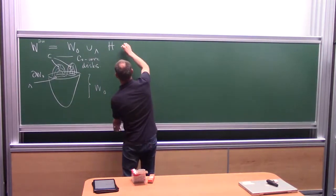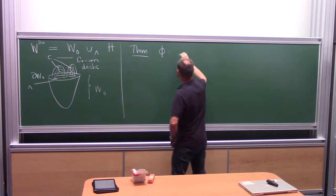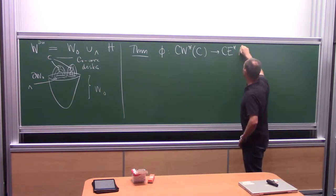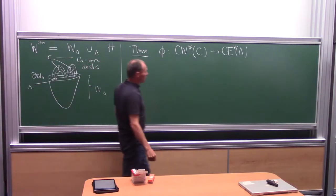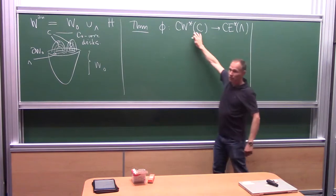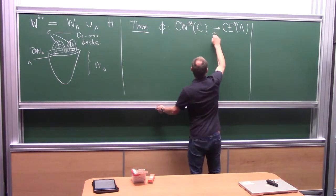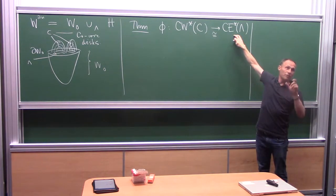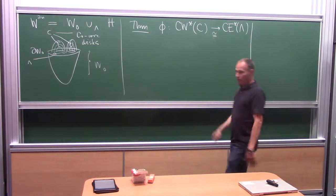The surgery theorem says there is a natural isomorphism from the wrapped Floer homology of these co-cores to the Chekanov-Eliashberg algebra of the Legendrian spheres lambda. The map phi is an isomorphism — this is an A-infinity algebra on the left, and the DGA algebra on the right, which we can view as an A-infinity algebra by taking words and taking products as concatenation of words.